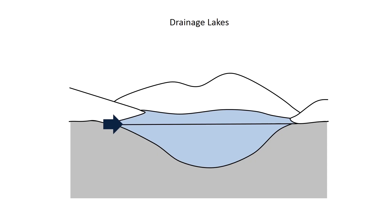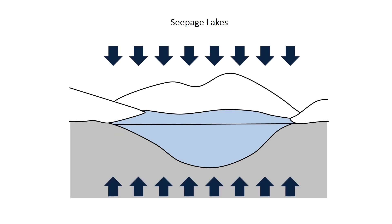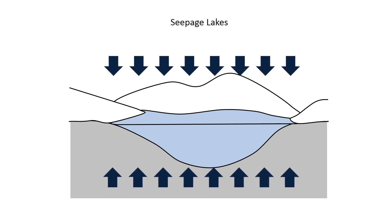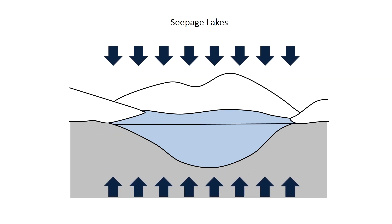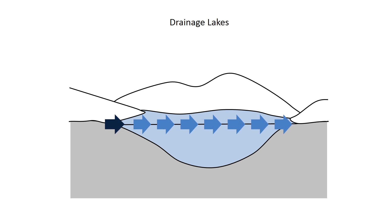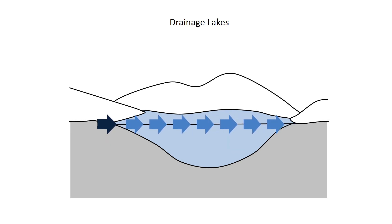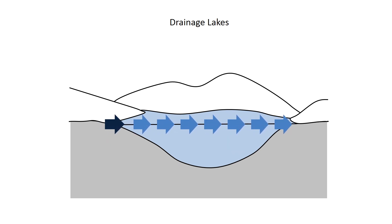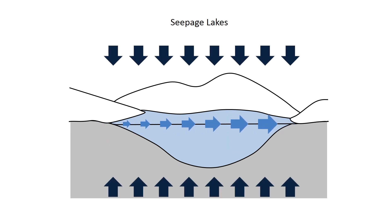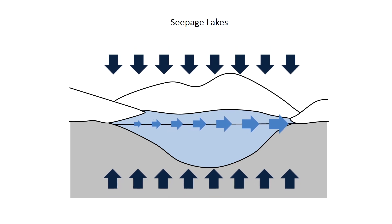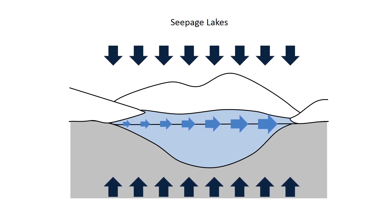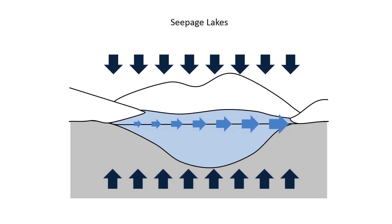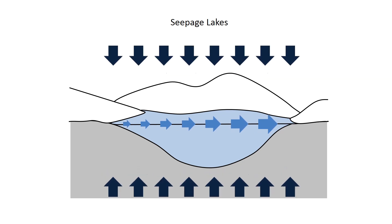Er zijn twee types van lakes: drainage lakes en seepage lakes. In drainage lakes inflowing rivers creëren een almost constant water flow. In seepage lakes, groundwater en rain cause de water flow to accelerate towards het outflow point.